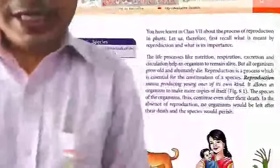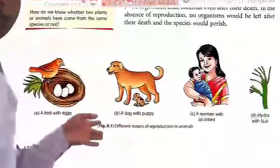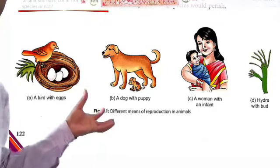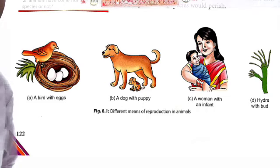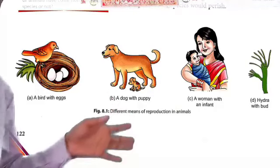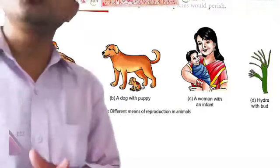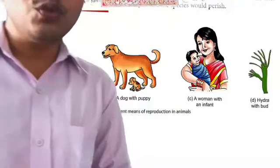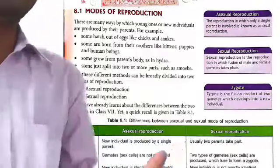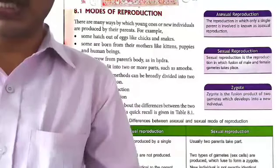What is the topic of reproduction? Looking at page number 122, we see different modes. In this chapter, there are different methods of reproduction in unicellular organisms and multicellular organisms, which we will study. What are the modes of reproduction?